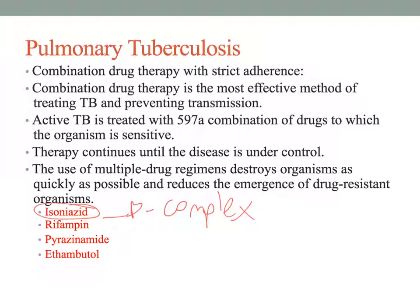Isoniazid can cause peripheral neuropathy—pain and numbness in the extremities with large doses—and vitamin B-complex supplements can help prevent this. A major restriction for most tuberculosis combination medications is that patients should not drink alcohol while taking the drugs; isoniazid is one such medication.